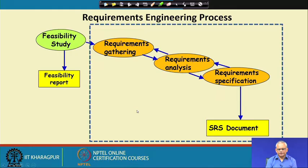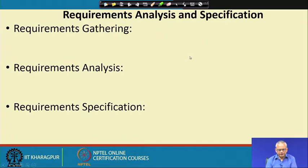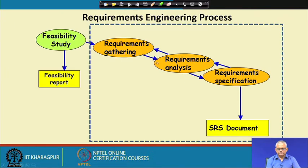We can also represent this in a more elaborate way. After the feasibility study, the project has been found feasible and requirements gathering starts. This is iterative work — once we do requirements gathering, we start requirements analysis, but then we might find we need to do more gathering and resolve issues. During requirements specification we might find requirements problems, prompting more analysis and gathering. This iterative set of activities ends with the SRS document produced.